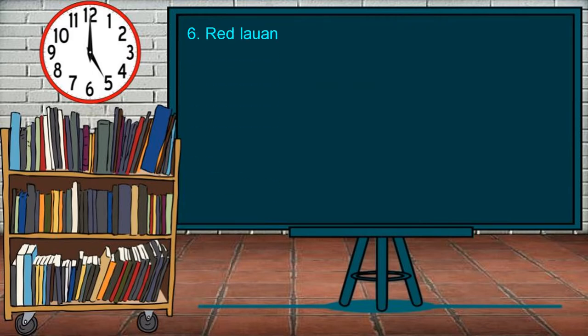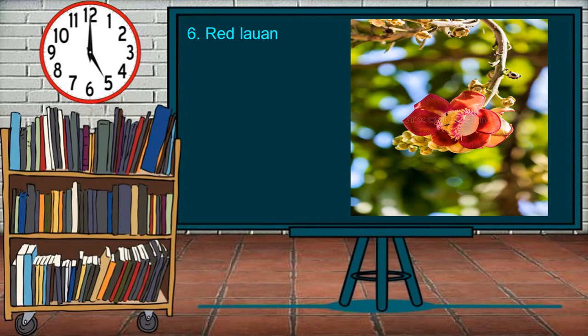Red Laan is a large tree attaining a height of about 50 meters and a diameter of about 200 centimeters. It is strongly buttressed with a straight cylindrical bole. Its leaves are alternate, smooth, dark green above, hairy along the nerves beneath, and oblong in shape. Red Laan is a valuable export sawn timber.